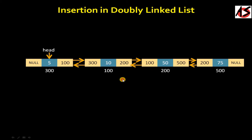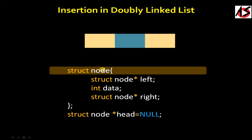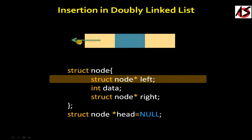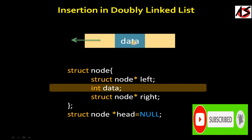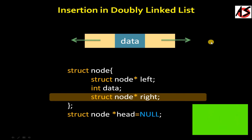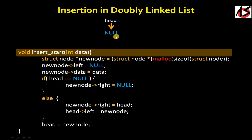Now we will see the basic structure of a node in a doubly linked list. The struct node has one pointer called left, pointing to the previous node, a data part, and a right pointer pointing to the next node. The head node is taken as a global variable and is initially null.